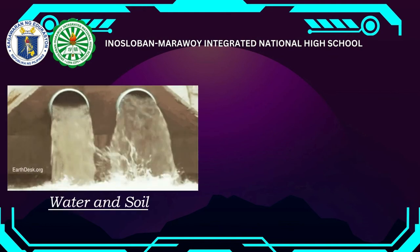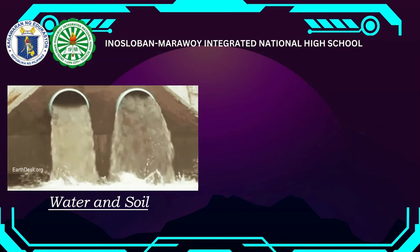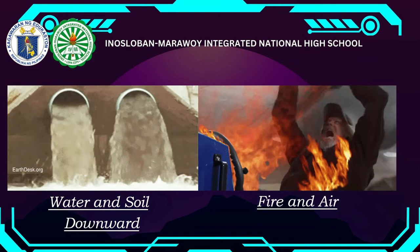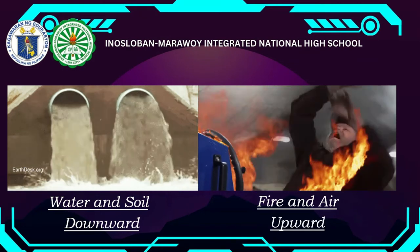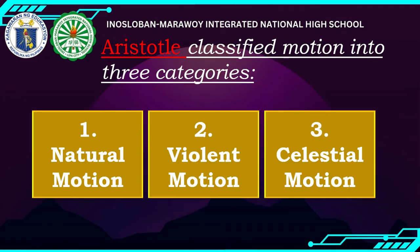For example, water and soil have a proper place towards the center of the earth — downward motion. Fire and air, on the other hand, move upward toward the sky — that is their proper place. Aristotle classified motion into three categories: natural motion, violent motion, and celestial motion. Some references only list natural and violent, but a third source added celestial, so we will discuss all three.